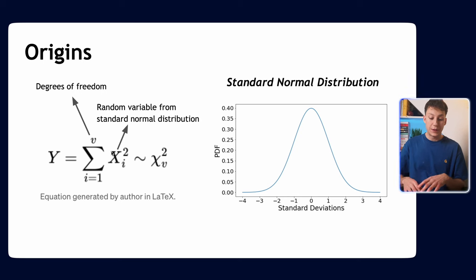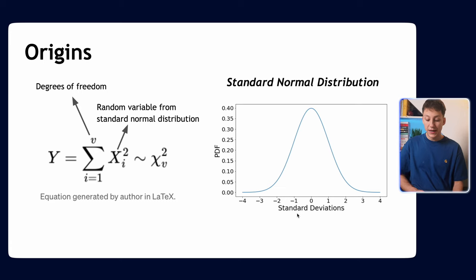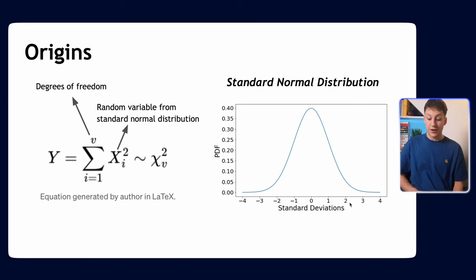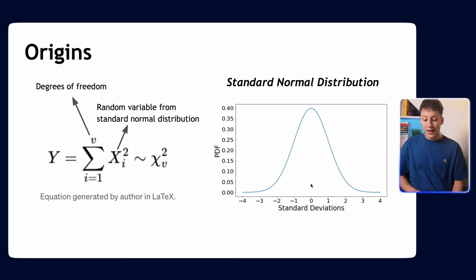x is a random variable from the standard normal distribution, which has a mean of zero and a variance of one. As you can see, a lot of the data points are concentrated around minus one and one — one standard deviation — and you're very unlikely to sample values at the extremes. We're very likely to get values between plus or minus one, and very unlikely to get any values outside that range.